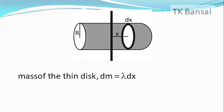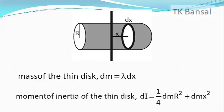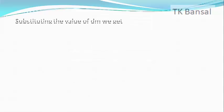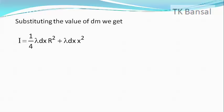The mass of the thin disk dm is equal to λ dx. Using the parallel axis theorem, the moment of inertia of the thin disk about the axis of rotation, dI, is equal to (1/4) dm R² plus dm x². Substituting dm = λ dx, we get dI = (1/4) λ dx R² + λ dx x².